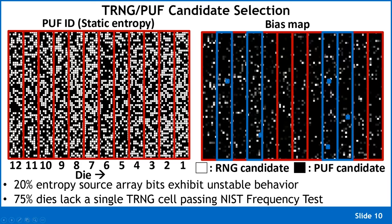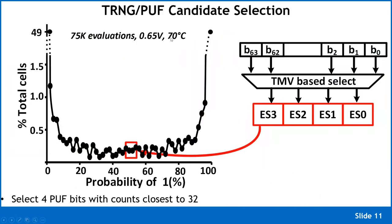The idea then was: since we have many mediocre TRNG cells, can we extract entropy from each one individually — even though none can be used alone as a TRNG — and collate that entropy to produce a near-full-entropy output? We use temporal majority voting on the 512-bit array to identify which bits can serve as TRNG bits, picking the four best entropy sources — those with counts closest to 32 out of 64.